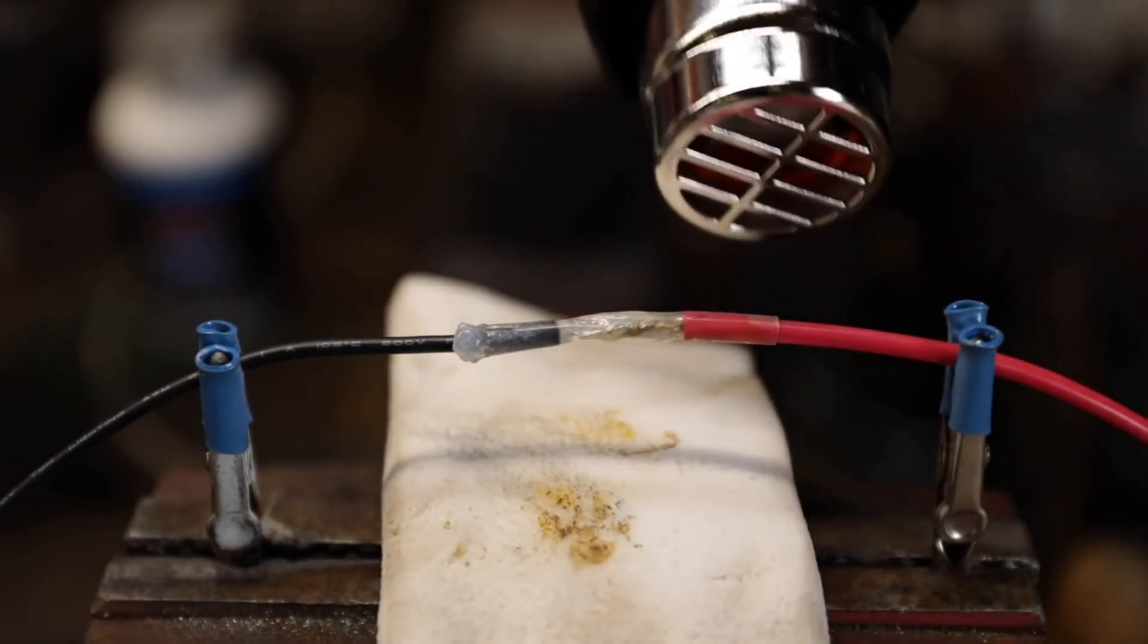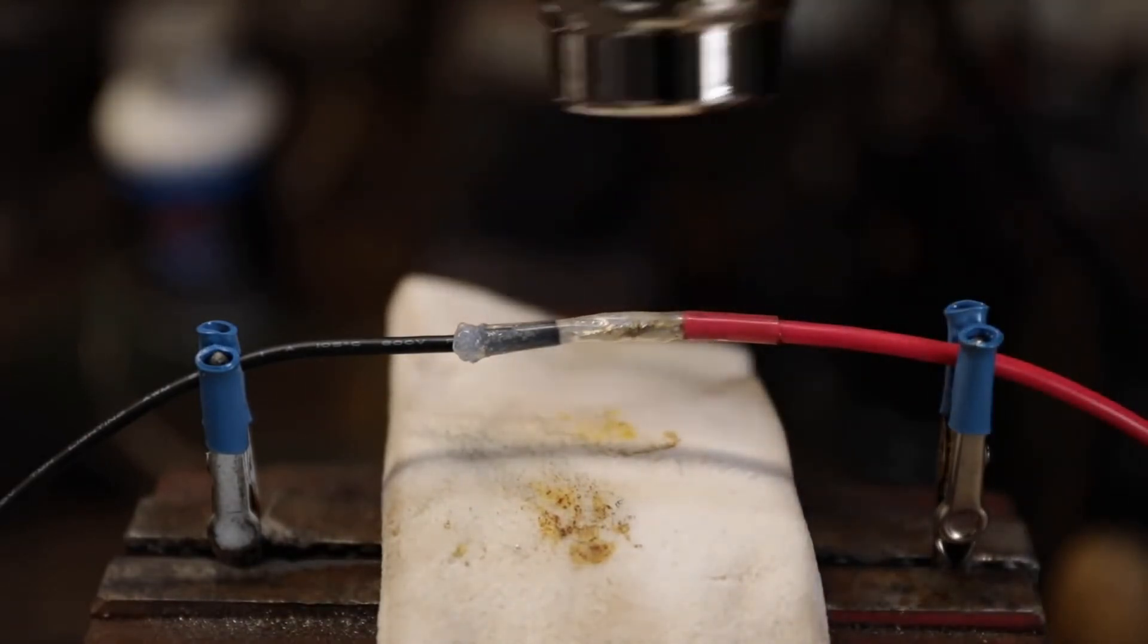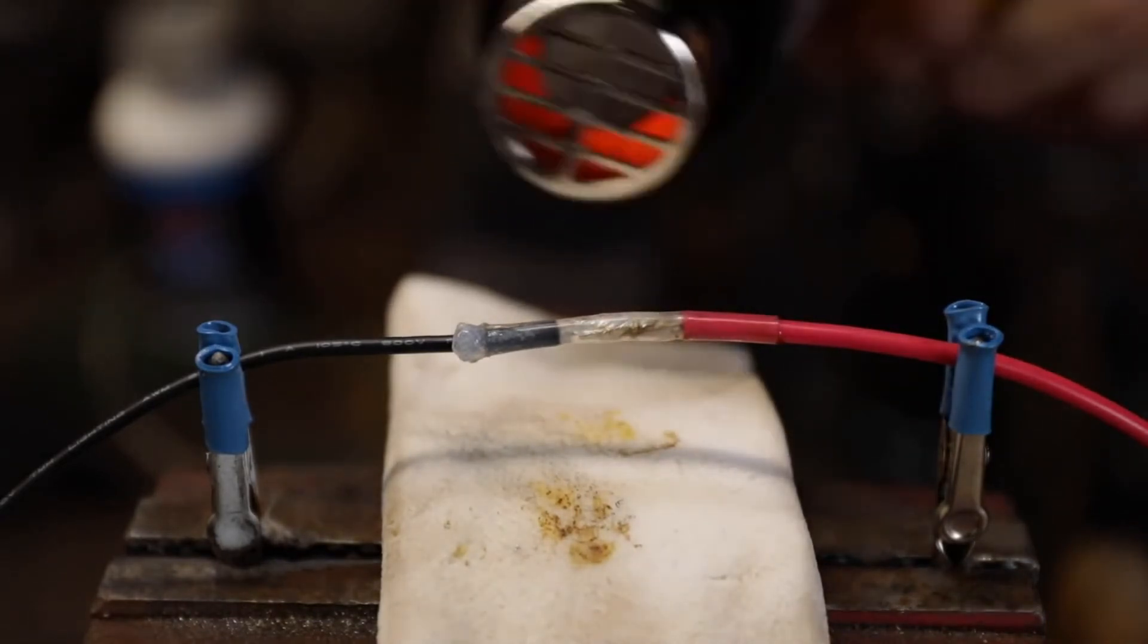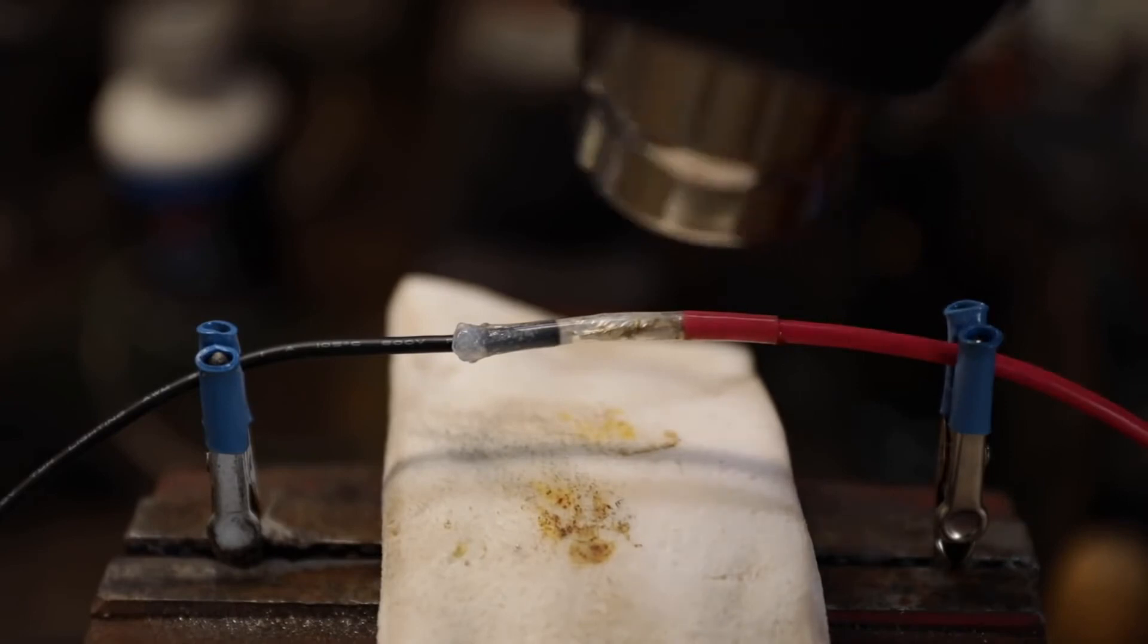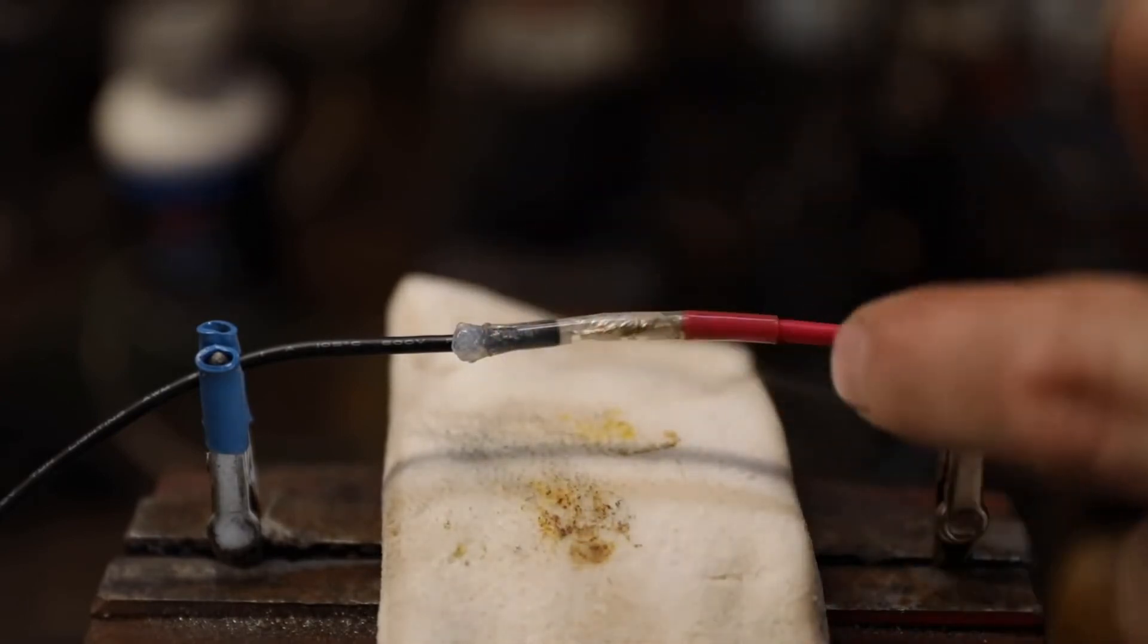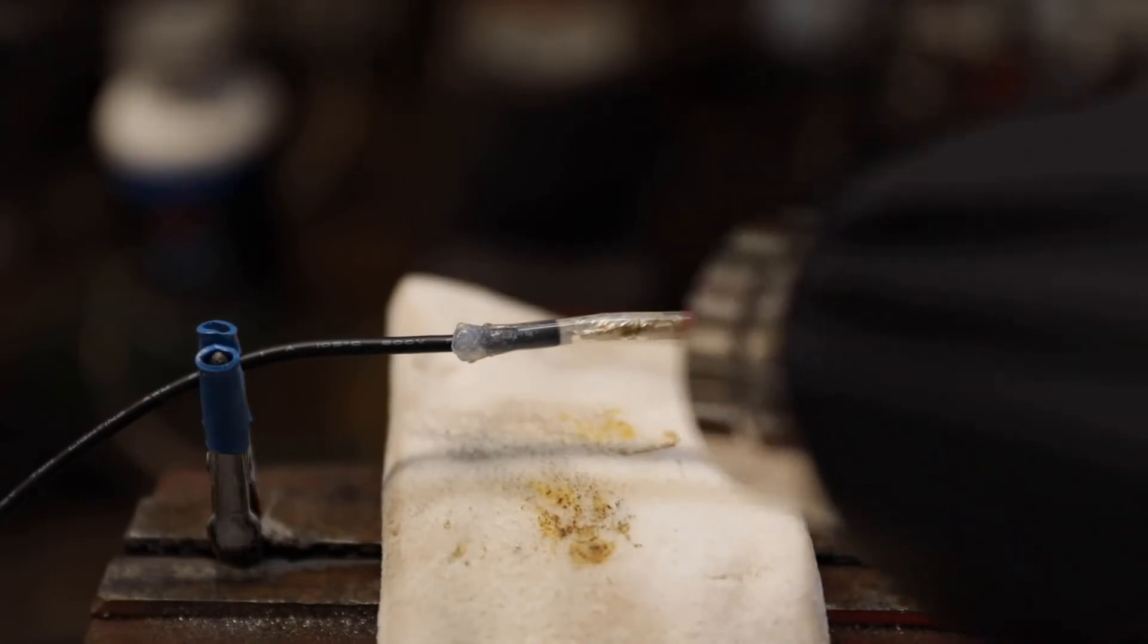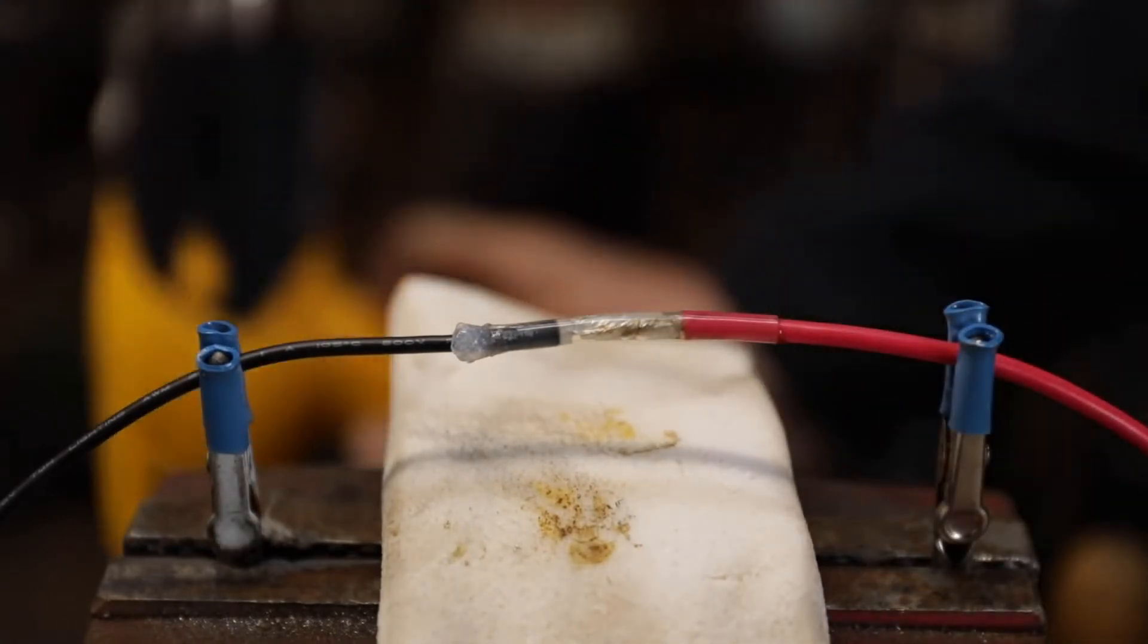You'll see that silicone making that seal as the shrink tape tightens around the connection. Ideally you want it to squeeze out. That side right there probably should have put a little bit more on the housing, but that looks pretty good right there actually.